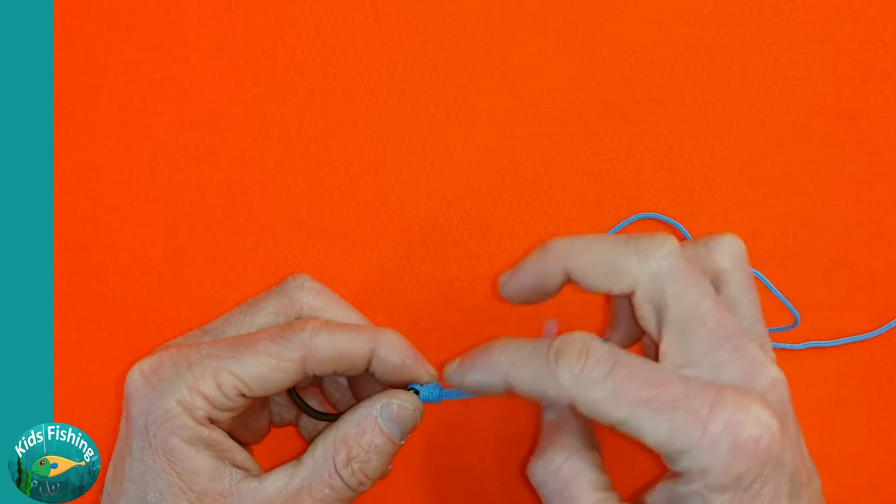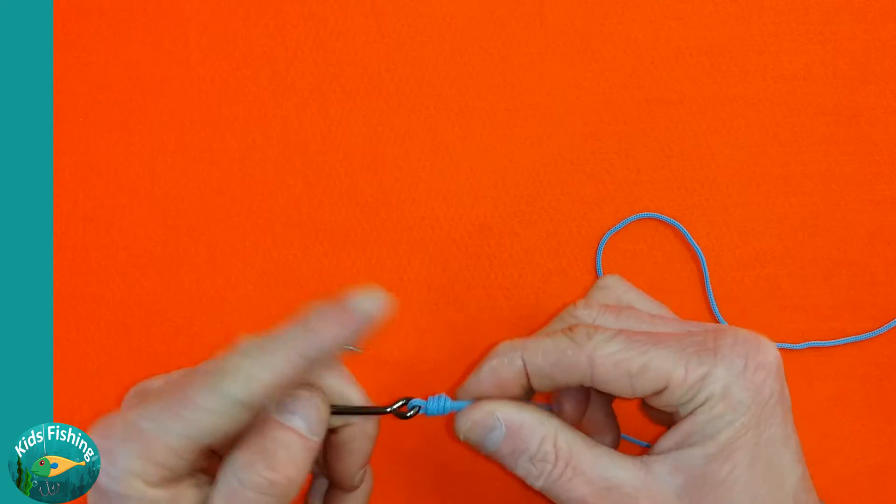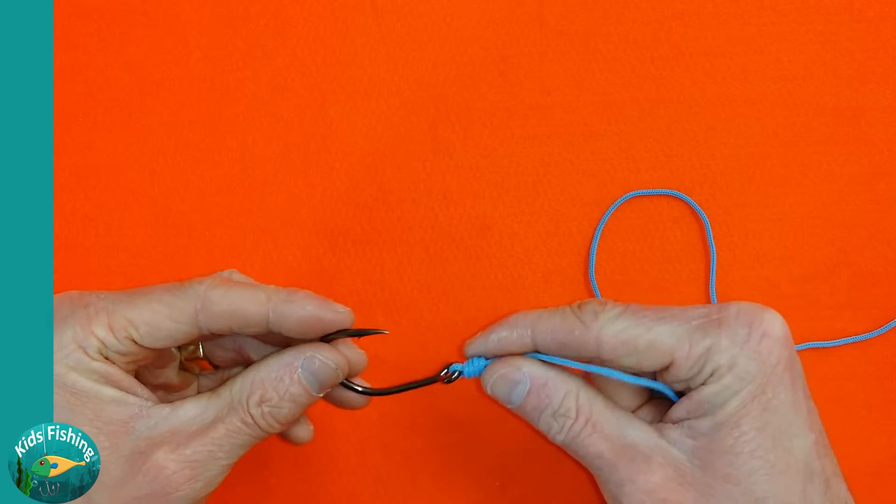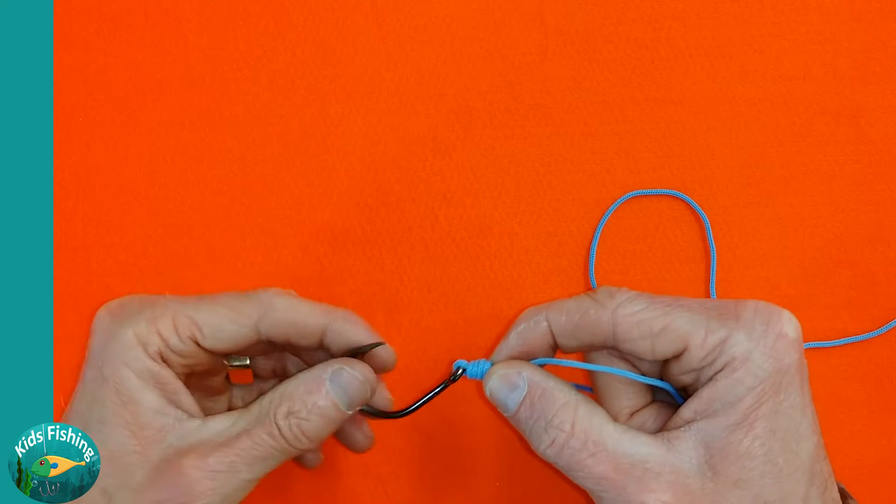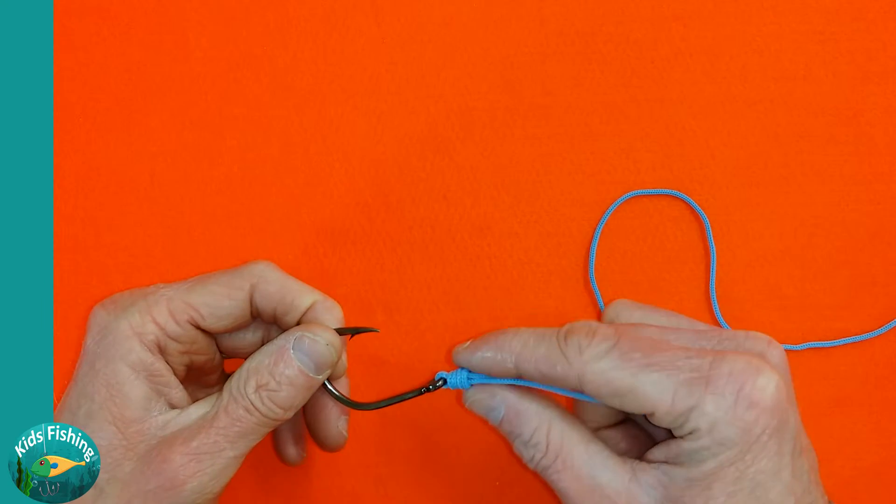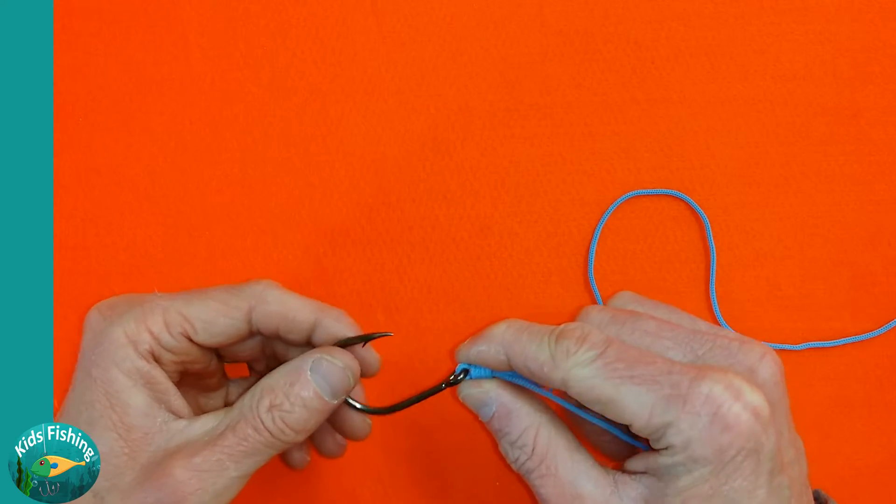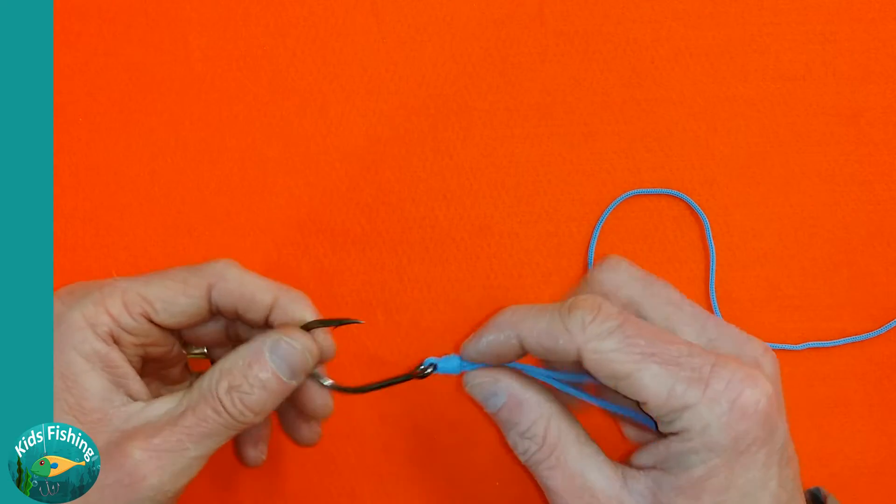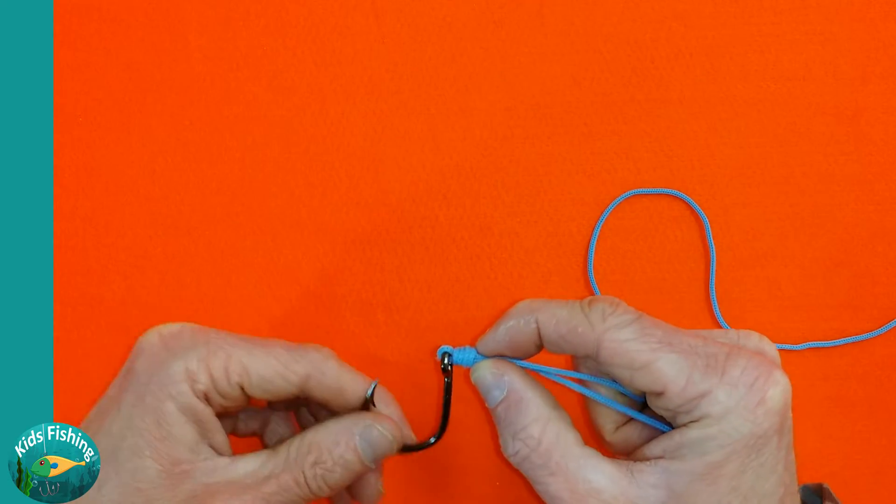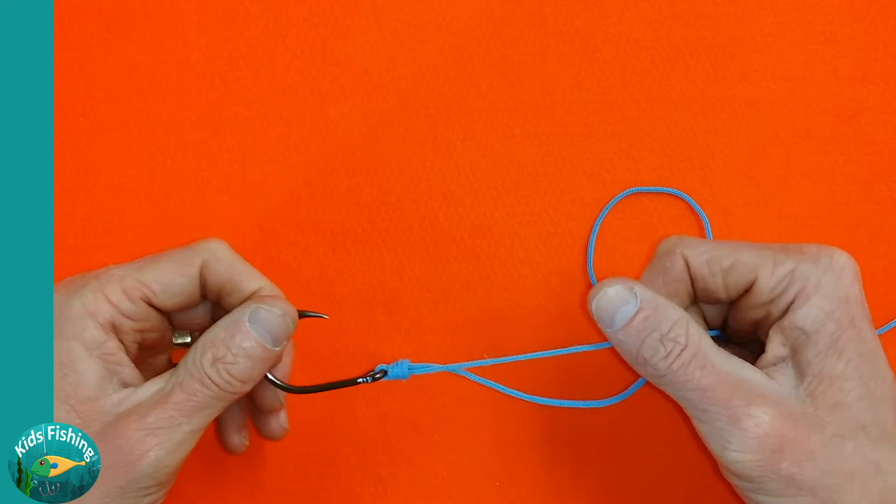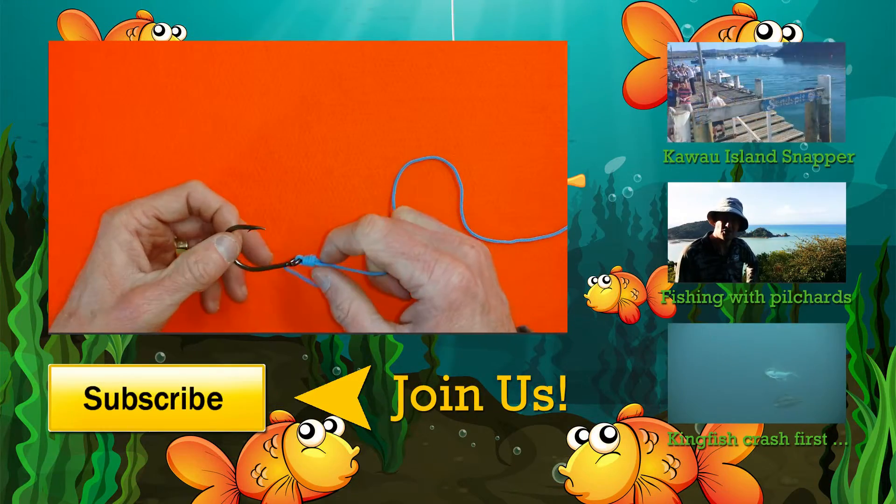So the uni knot is a fantastic knot because it's very easy to tie. It has a couple of different tying methods in terms of an open loop or a closed up cinched knot, so it's flexible. It retains most of its breaking strength and it's a great beginners fishing knot.